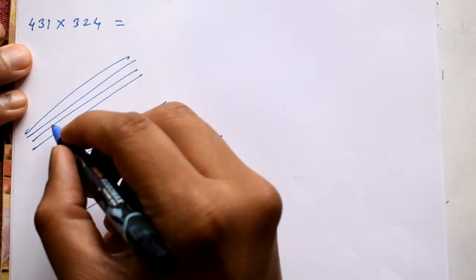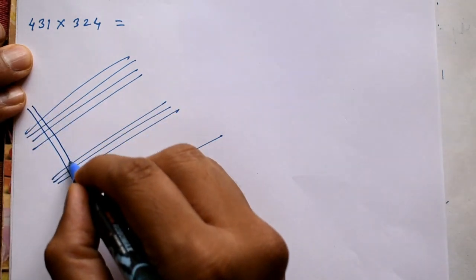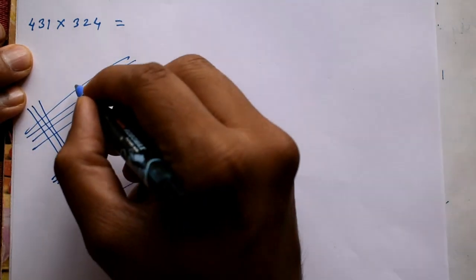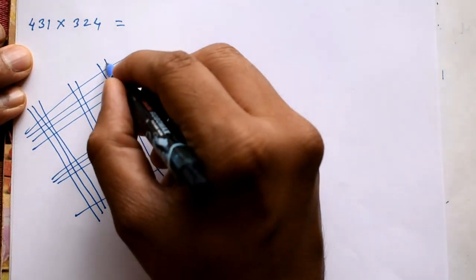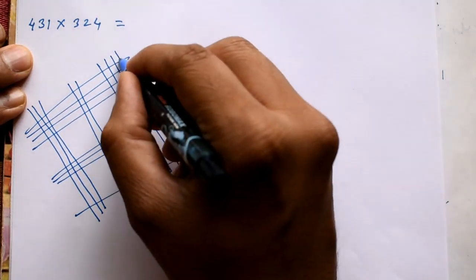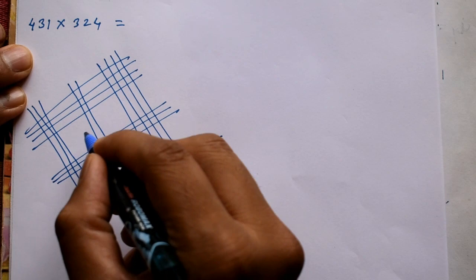Second number is 324. First you draw 3 lines. Then after some gap, 2. Then after some gap, 4 lines. Like this. 324.